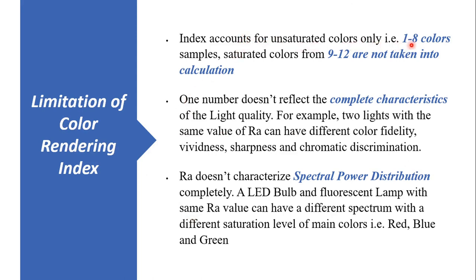Now let's see the limitations of CRI. First, CRI only accounts for unsaturated colors — that is, the first eight color samples; saturated colors from samples nine to twelve are not included in the calculation. Second, one number does not reflect the complete characteristics of light quality; two lights with the same CRI can have different color fidelity, vividness, sharpness, and chromatic discrimination. Third, CRI does not completely characterize spectral power distribution — a light bulb and fluorescent lamp with the same CRI can have different spectra and different saturation levels of red, blue, and green. For example, incandescent lamps and daylight both have a CRI of 100 but do not have the same spectral power distribution.